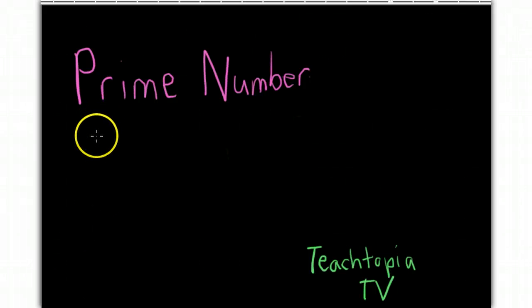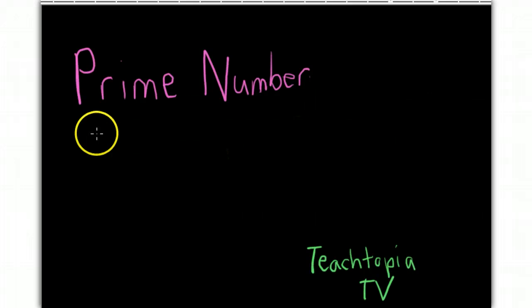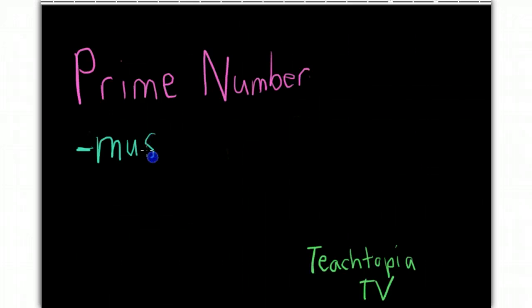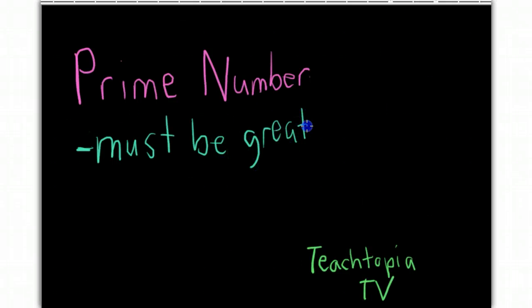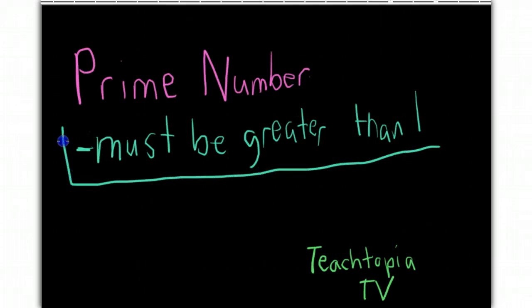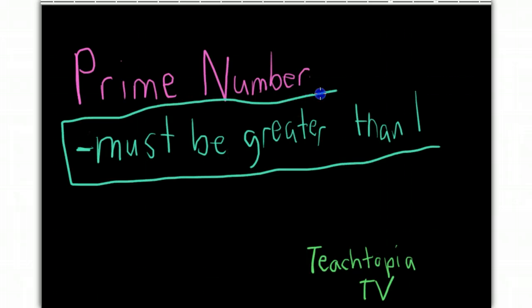So let's go over that real core tenet. Must be greater than one. This is very significant. One of the first things I ever tell students when they're thinking about prime numbers is that one itself is